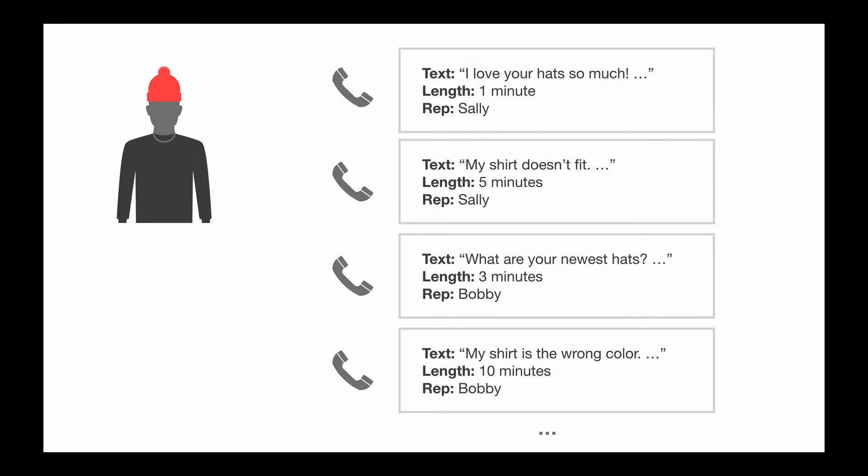So if you wanted to figure out what people are thinking about your product, you could go through and listen to all the voice calls, but that's going to take way too long. So instead, what you can do is you can take that text data and you can apply some NLP on that. And then with the NLP, you can see which messages are positive and which ones are negative. And so overall, you can see that people really like your hats and people don't really like your shirts. And so this is called sentiment analysis, which is a type of NLP technique.